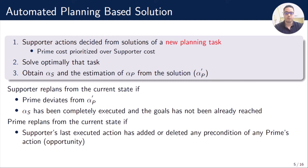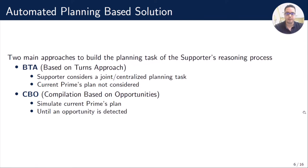Prime replans from the current state if Supporter opens an opportunity — that is, if Supporter's last executed action has added or deleted any precondition of any of Prime's actions. Our two main approaches to build the planning task for Supporter's reasoning process are BTA, compilation based on turns, and CBO, compilation based on opportunities. BTA computes a planning task in a centralized way using turns, and CBO simulates the current Prime's plan until an opportunity is detected.